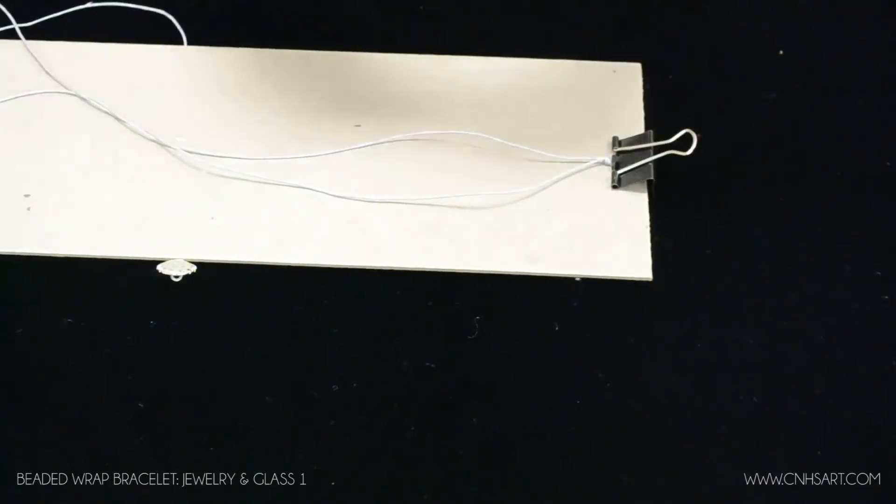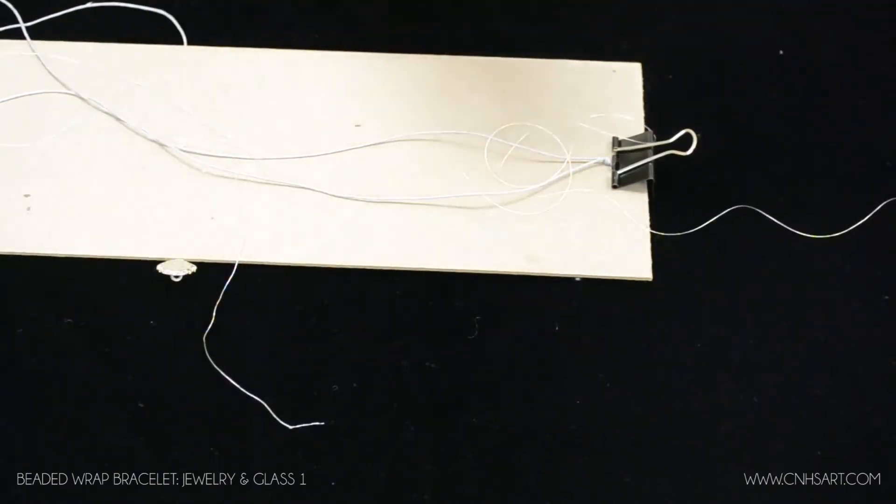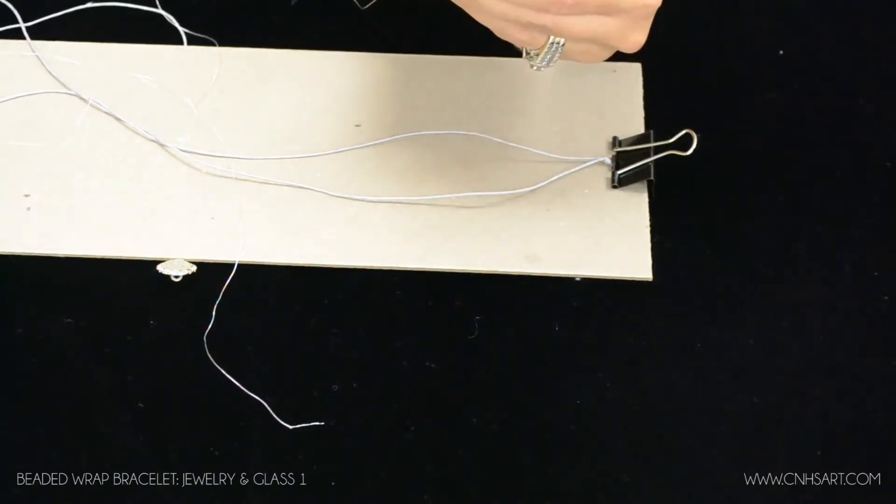Next what we're going to do is take the thread and we're just going to take about an arm span of it, trim that off, thread your needle. If you have a needle threader to use that's great that's super helpful.